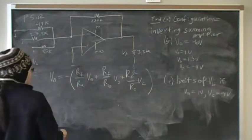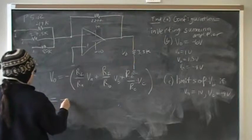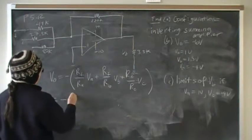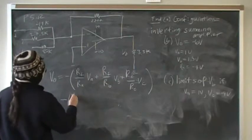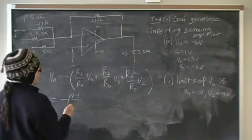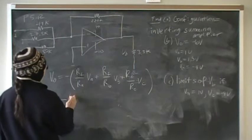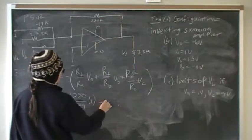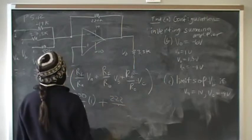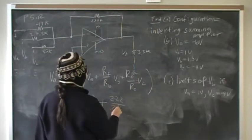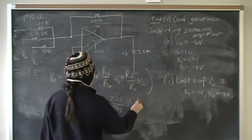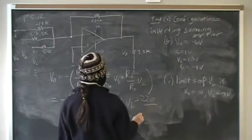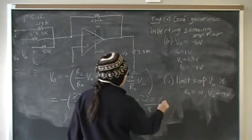In this case, everything is a known quantity except for Vb. So we have negative (220/44 × 1 + 220/27.5 × Vb + 220/80 × -4).